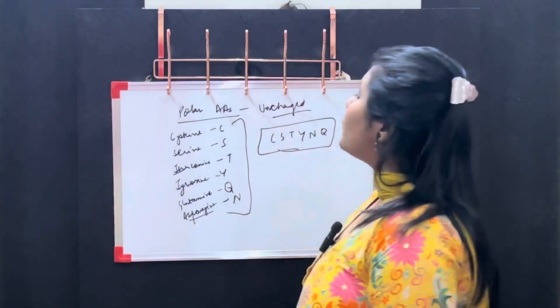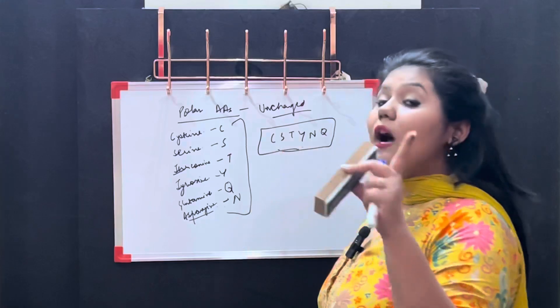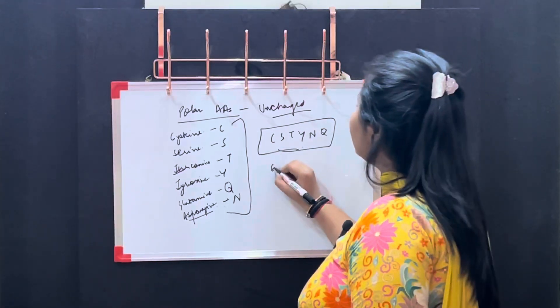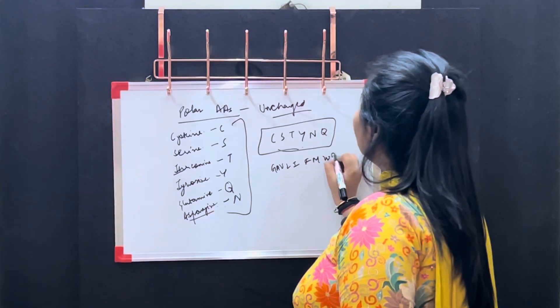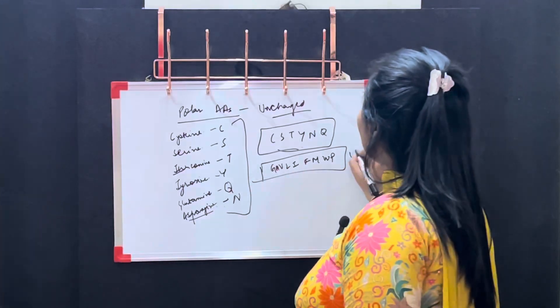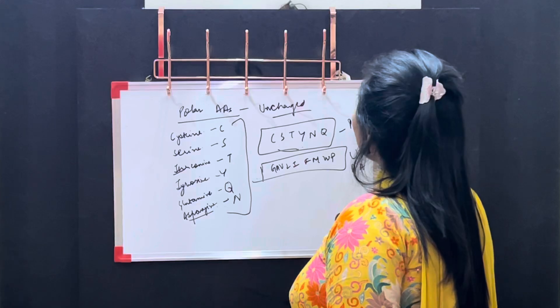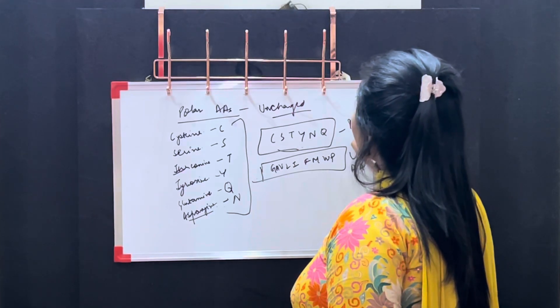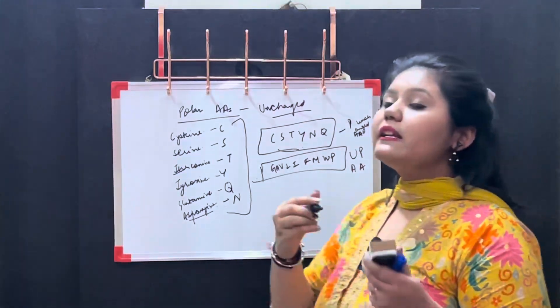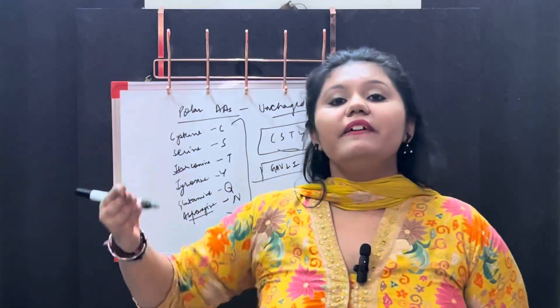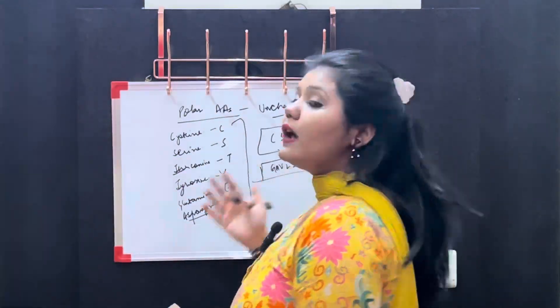So this is your polar uncharged amino acids mnemonic — C-S-T-Y-N-Q. Say it five times and you will remember that these are the polar uncharged amino acids. And the trick for non-polar amino acids is GAVLI FMWP.